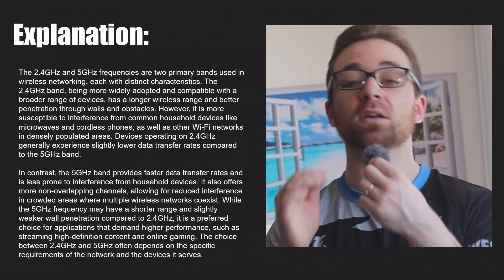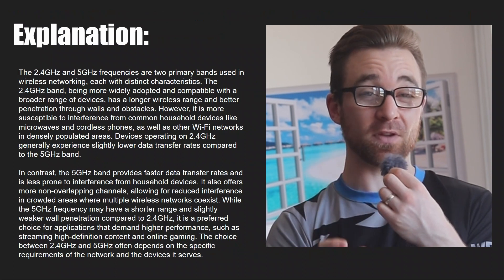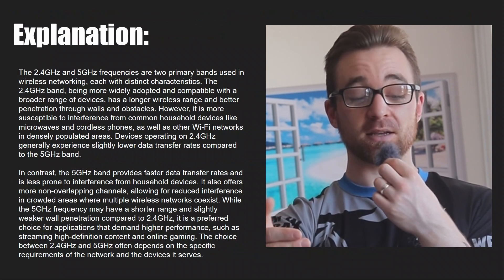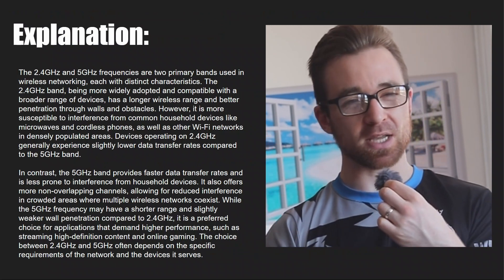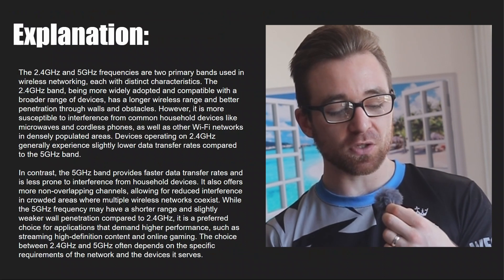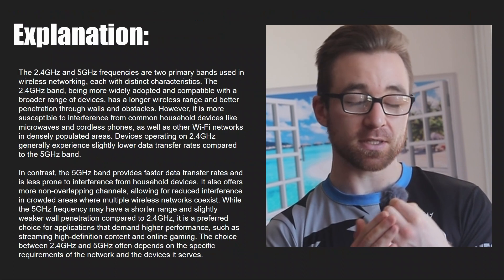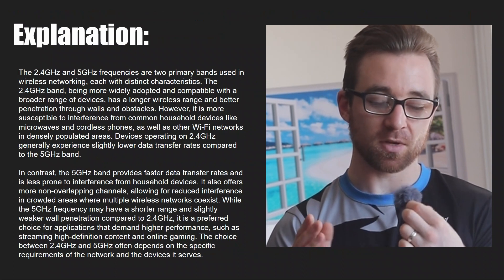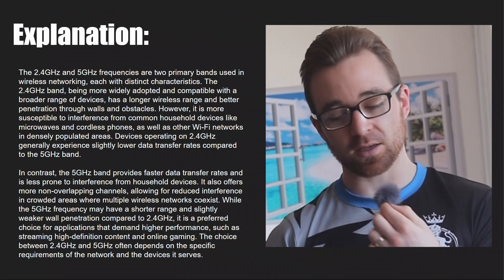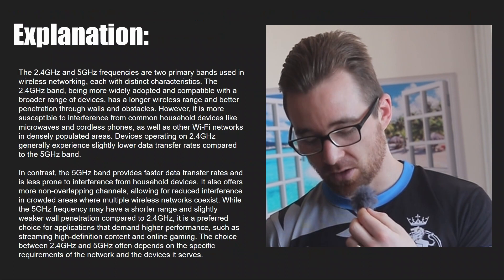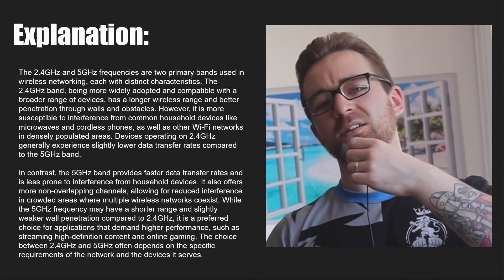5 gigahertz is less susceptible to interference from household devices like microwaves when compared to 2.4 gigahertz. Long story short: 5 GHz means shorter range, less susceptible to interference, and higher speeds. 2.4 gigahertz means longer range but more susceptible to interference. Additionally, 2.4 gigahertz generally has fewer channels to choose from, while 5 gigahertz has more channels. If you're comfortable with that, you're ready to conquer it in your exam.